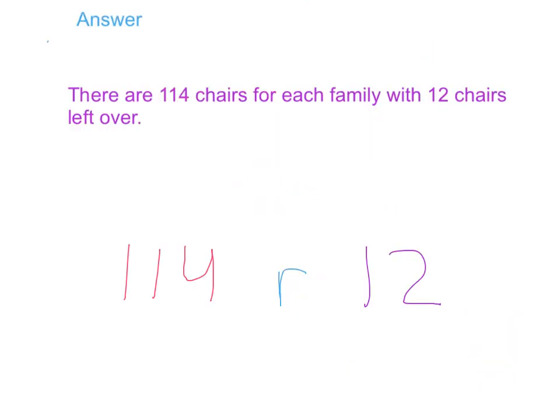Last, we can answer our question now that we've done the division, and there are 114 chairs for each family member with 12 chairs left over. And so our official answer is 114 remainder 12.